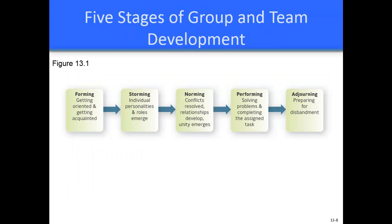Now let's look at part two of chapter 13: stages of group and team development. Groups and teams go through five stages of development, seen in figure 13.1: forming, storming, norming, performing, and adjourning. The first stage is forming — the process of getting oriented and acquainted. This stage is characterized by a high degree of uncertainty as members try to break the ice and figure out who's in charge and what the group's goals are. Mutual trust is low, and leaders should allow time for people to become acquainted and socialized.